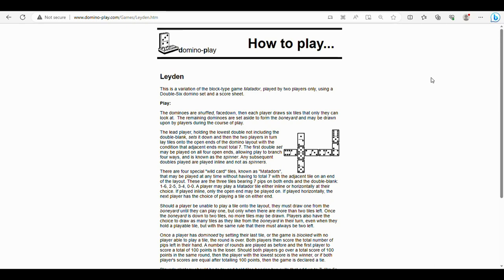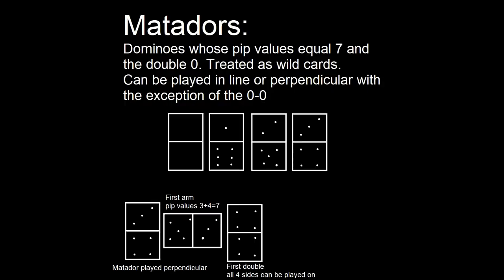It is a two-player domino game similar to the domino game Matador, which we might cover later. You're going to have four different matadors. These are dominoes whose pip values equal 7 and the double 0. These will be treated as wild cards that can be played inline or perpendicular, with the exception of the 0-0.